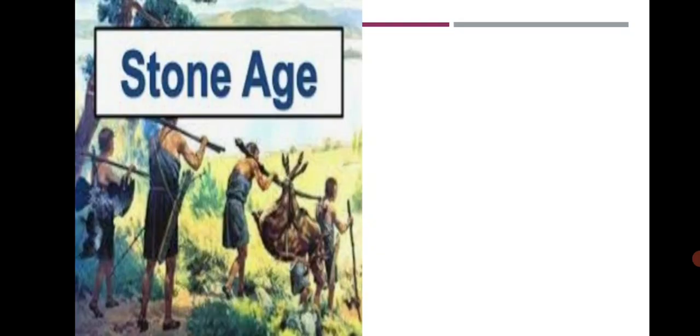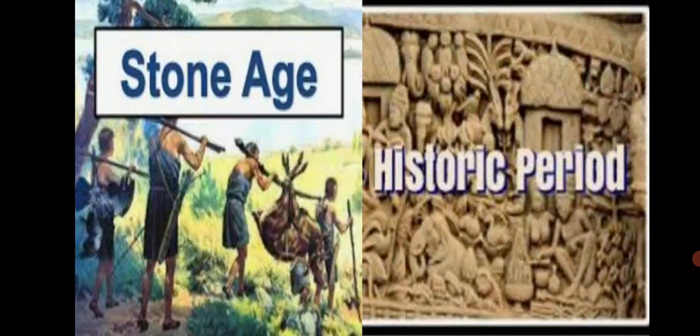We have seen in Lesson 2 that written records are available in the form of inscriptions, manuscripts, books etc. for the historic period. In all ancient civilizations, the art of writing was developed. They used fully developed scripts. Here in this picture, you can see some examples of scripts of the ancient period. With the rise of ancient civilization, the new stone age came to an end and the historic period began.